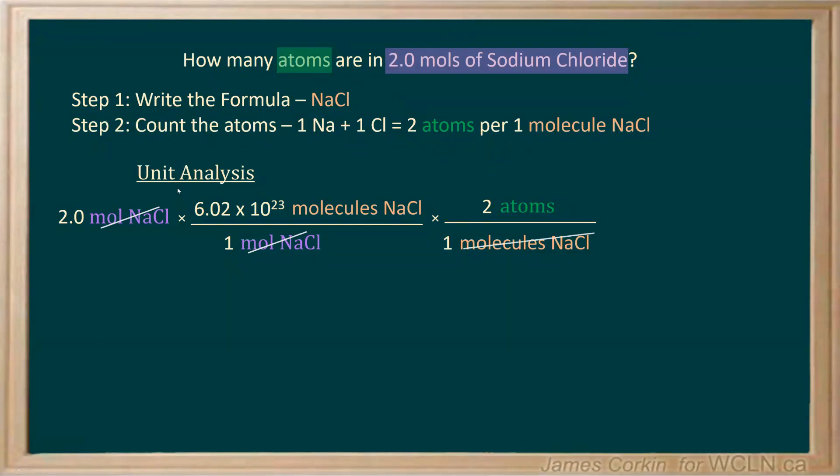So when we go to our calculator, after making sure we indicate that these cancel correctly, we enter 2.0 times 6.02, exponent button 23 times 2. You'll notice that it's all multiplying because the important numbers are on top. I can ignore the ones because multiplying by 1 or dividing by 1 does not change the value of a number.